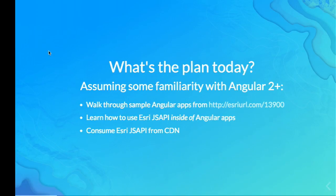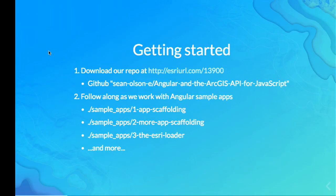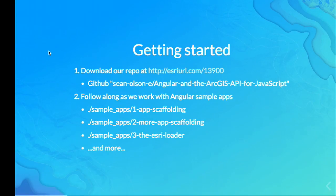The shortened URL to the same repo is esriurl.com/13900 — that's faster to type. If you want to, you're welcome to clone, grab, or download it. We have a pattern in this repository where we have a subfolder called 'sample apps', and we'll step through a few of those.